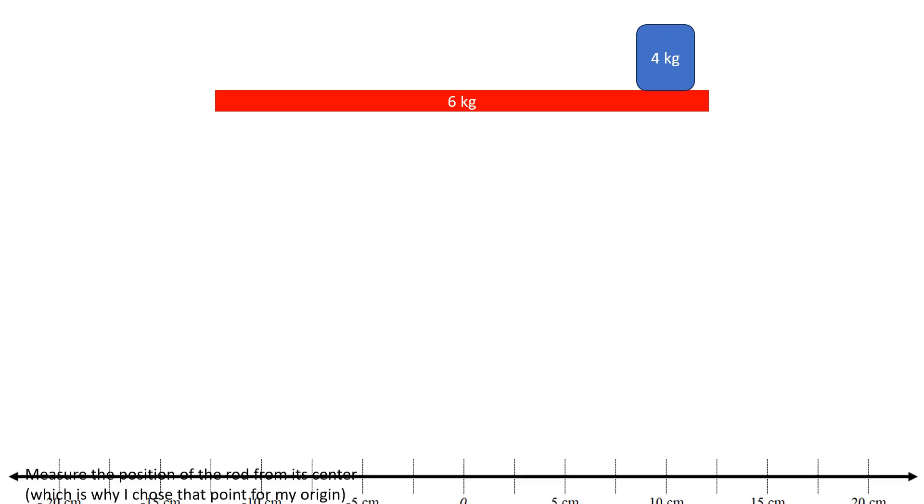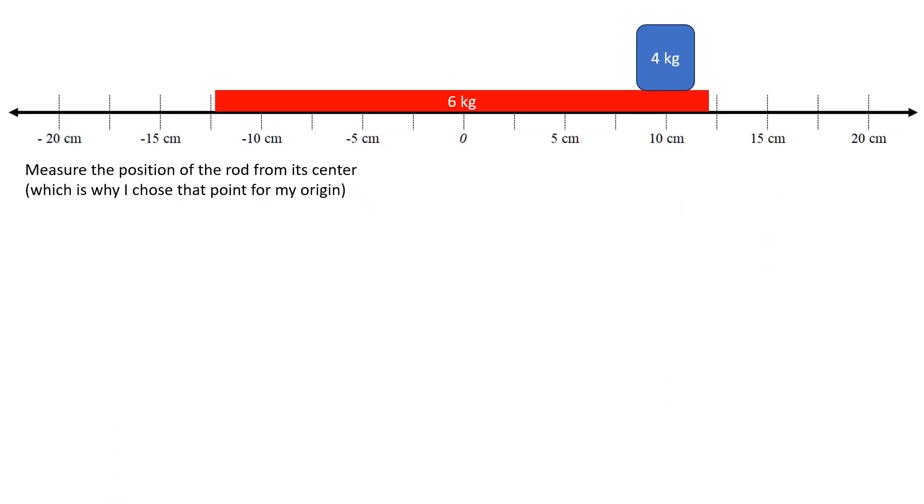Let's do one last example together where I have a long rod of mass six kilograms, and we put our four kilogram object at the end. Our first job is to figure out a coordinate system. In this case, I'm going to put the coordinate system such that zero is at its center, the center of the rod, which is going to make the math a little bit easier. I could put it anywhere I like, but I need to put it in a spot that's convenient for me.